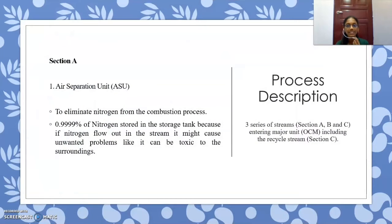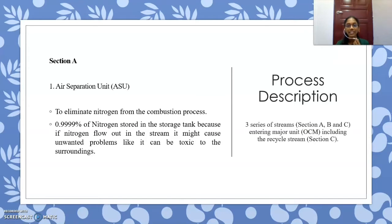For the process description, there will be three series of streams divided into Section A, Section B, and Section C entering the OCM reactor. For Section A, the first unit is the air separation unit, also known as ASU, which is used to eliminate nitrogen from the combustion process. 0.999% of nitrogen is stored in the storage tank because if nitrogen flows out in the stream, it might cause unwanted problems, as it can be toxic to the surroundings.